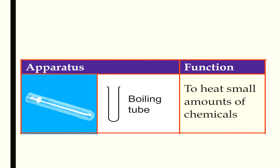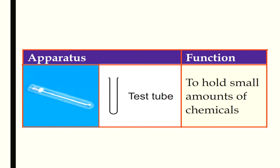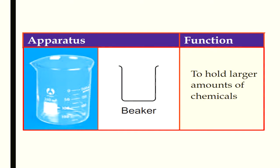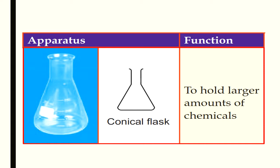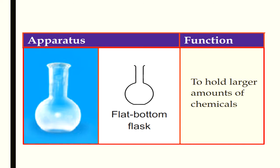Boiling tube - the function is to heat small amounts of chemicals. Test tubes - to hold small amounts of chemicals. Beaker - to hold large amounts of chemicals. Conical flask - to hold larger amounts of chemicals as well. Flat bottom flask - to hold larger amounts of chemicals.